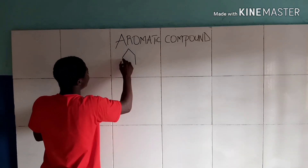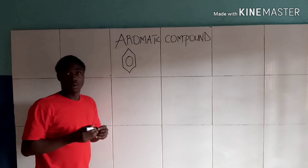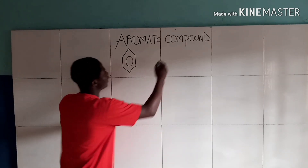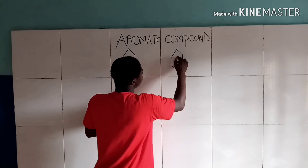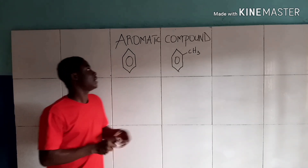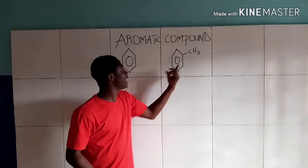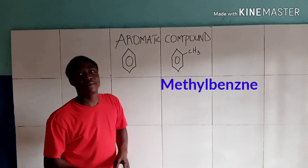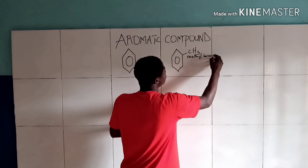This is the structure of benzene. Benzene has different derivatives, like benzene attached to a CH3 group. CH3 is called methyl, so whenever methyl and benzene combine, they form what is called methylbenzene.